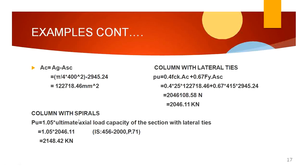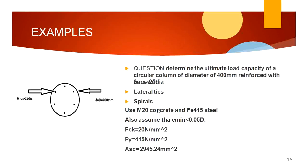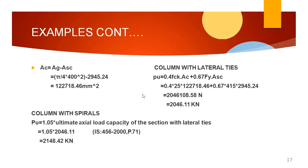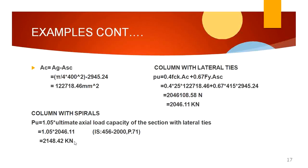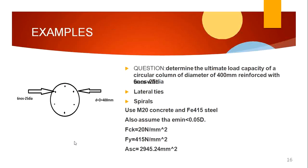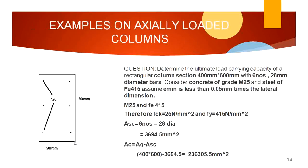Since the problem specifies helical (spiral) reinforcement, as per IS-456-2000 page 71, the ultimate load carrying capacity of a column with spirals = 1.05 × load carrying capacity with lateral ties = 1.05 × 2046.11 = 2148.42 kN. This is the ultimate load carrying capacity of the circular column with helical reinforcement.